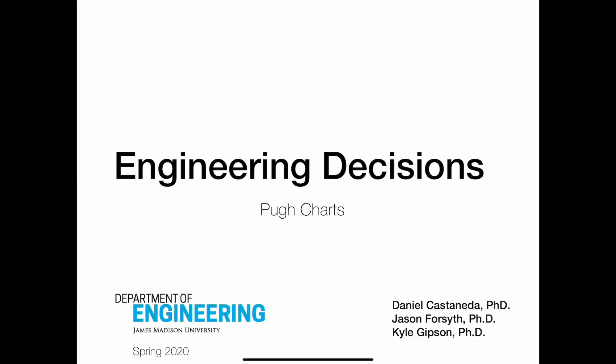In this video today, we're going to talk about an engineering decision-making technique called Pugh Charts. Pugh Charts are useful in the engineering design process when you have several initial concepts for some design and you would like some method to choose between them.